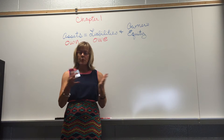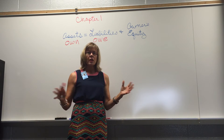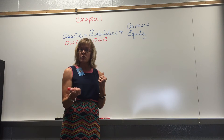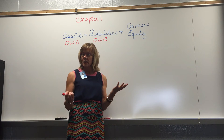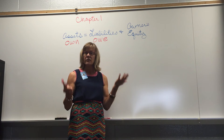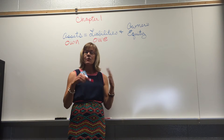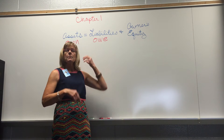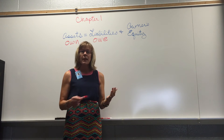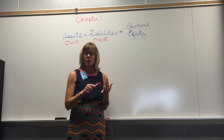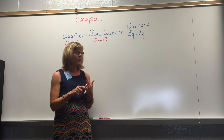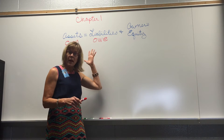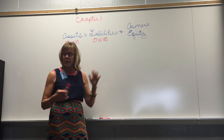Let's say we purchased tables and chairs for a donut shop. We bought tables and chairs and we owe money on those — that would be a liability. Maybe we purchased supplies like flour, sugar, and sprinkles for the donuts, and we owe money to those suppliers. That would also be a liability.